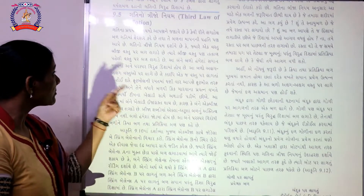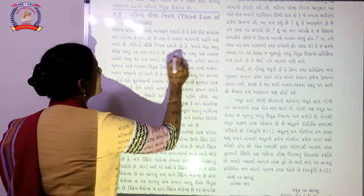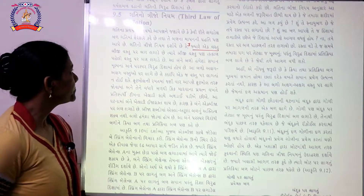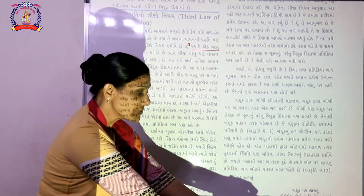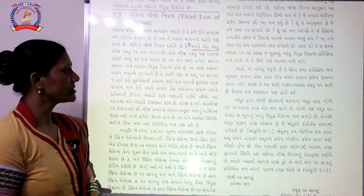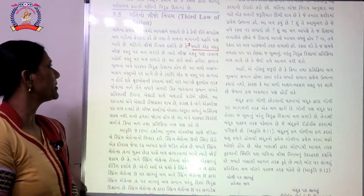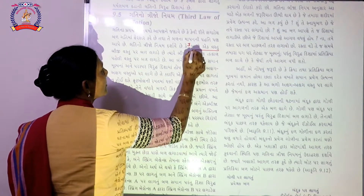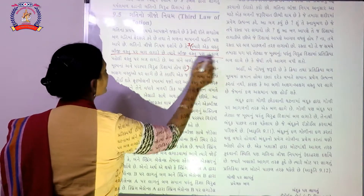બીજો નિયમ જણાવે છે કે જ્યારે બીજી વસ્તુ પેલી ઉપર બળ લગાવે છે, તતકાળ પેલી વસ્તુ ઉપર બળ લગળે છે. આ બળો હંમેશા સમાન મૂલ્યના અને પરસ્પર વિરુદ્ધ દિશામાં હોય છે. આ ત્રિજો નિયમ છે.